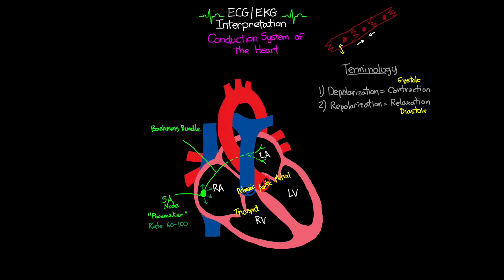Moving on, there's another area of specialized cells found down in the atrial septal wall. These cells are what we call the atrioventricular node, or AV node. The AV node is often referred to as the gatekeeper. Its job is to take that signal that originated in the SA node and pass it along throughout the rest of the conduction system. It receives this signal from the SA node through the use of three pathways called the internodal pathways, which ensure that depolarization from the SA node gets to the AV node to be passed along.